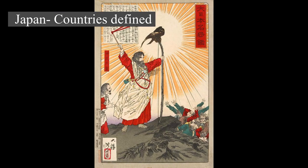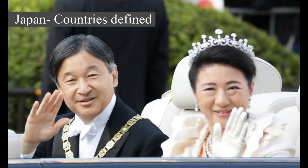Japan has been inhabited since the Upper Paleolithic period (30,000 BC), though the first written mention of the archipelago appears in a Chinese chronicle, the Book of Han, finished in the 2nd century AD. Between the 4th and 9th centuries, the kingdoms of Japan became unified under an emperor and the imperial court based in Heian-kyō. Beginning in the 12th century, political power was held by a series of military dictators (shōgun) and feudal lords (daimyō).